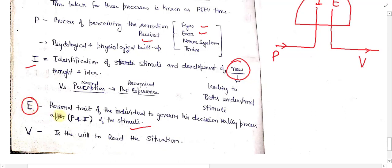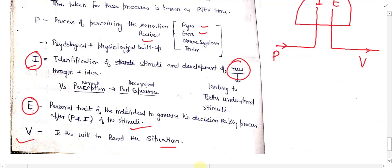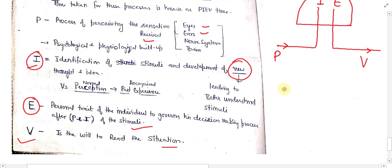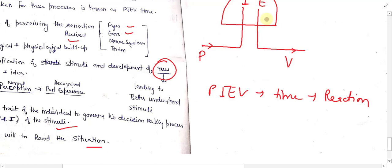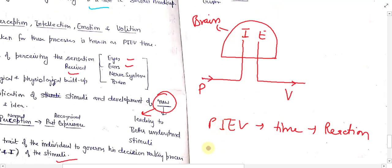These two processes occur inside the brain. Volition is the will to react to a situation — the final response by the human body. If the brain goes through the full PIEV process it takes some time, and this time is known as reaction time. But if the brain is not creating new thoughts — bypassing Intellection — then the process goes directly from Perception to Volition, and the time taken for this activity without full brain engagement is known as reflex time.